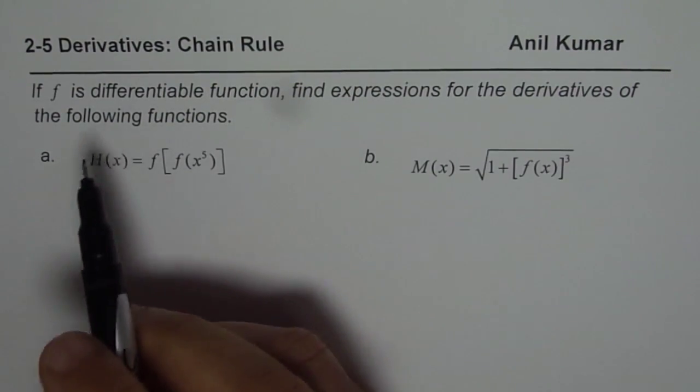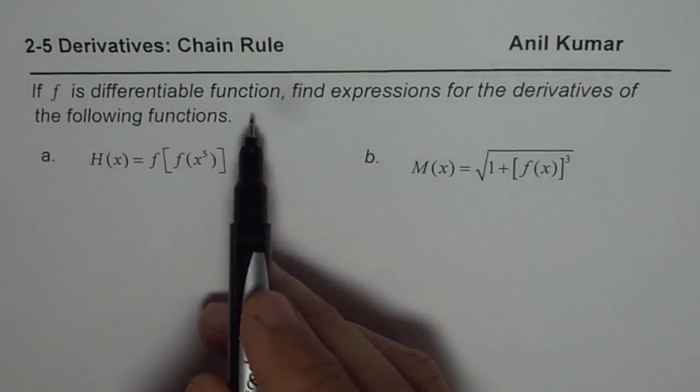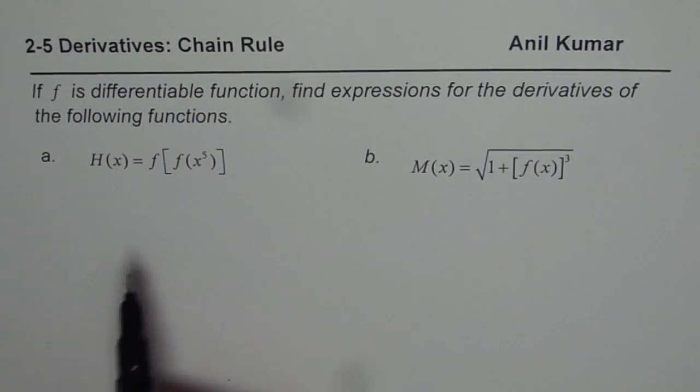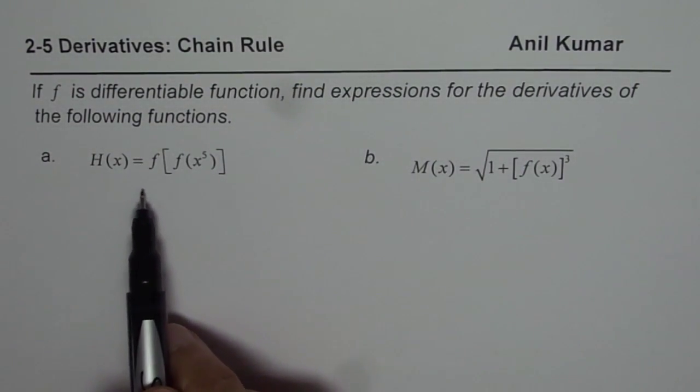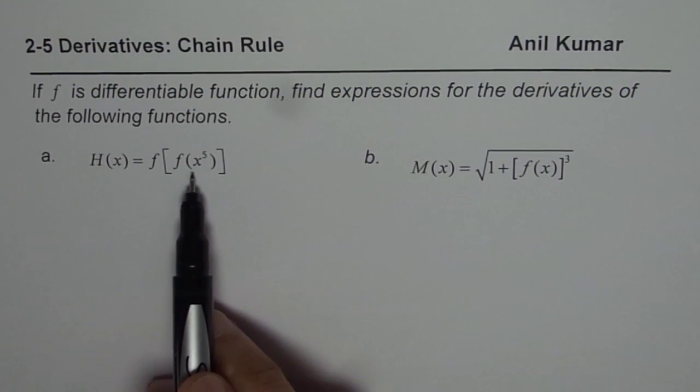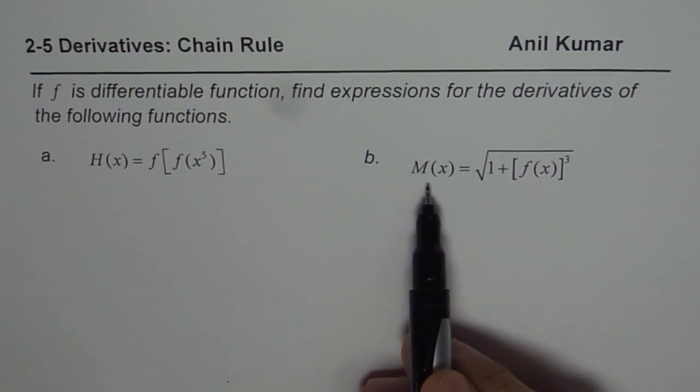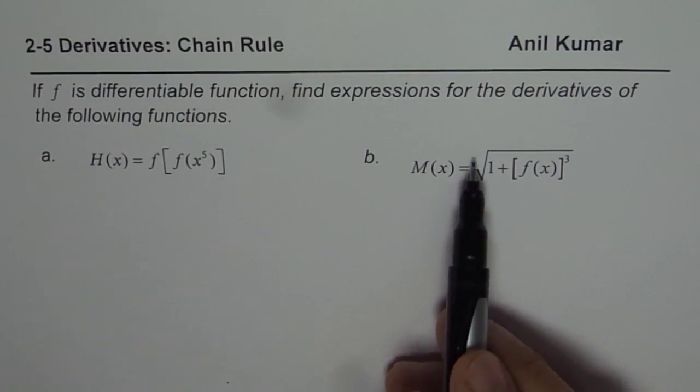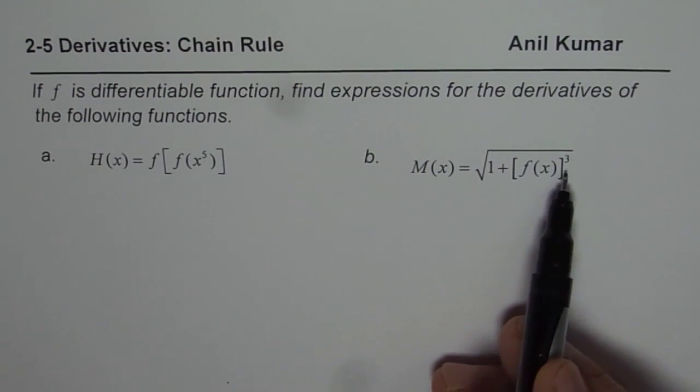The question here is, if f is a differentiable function, find expressions for the derivatives of the following functions. H(x) = f(f(x^5)) and the other function is M(x) = √(1 + [f(x)]³).